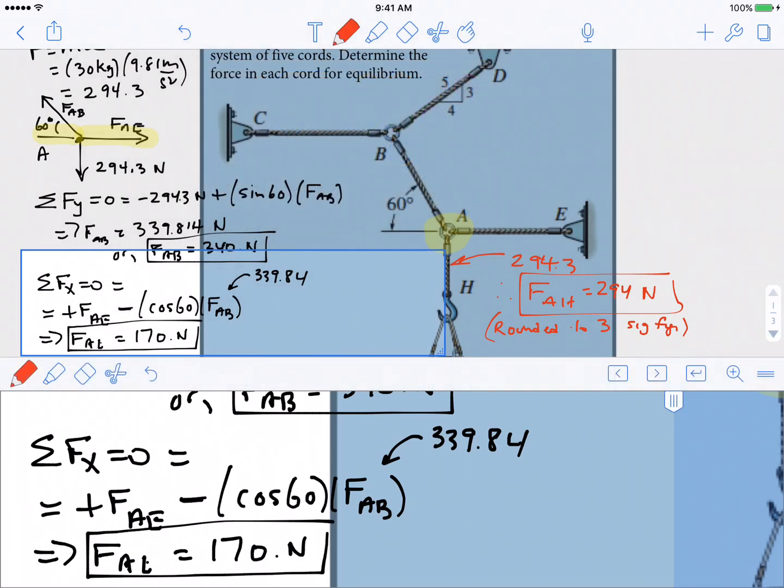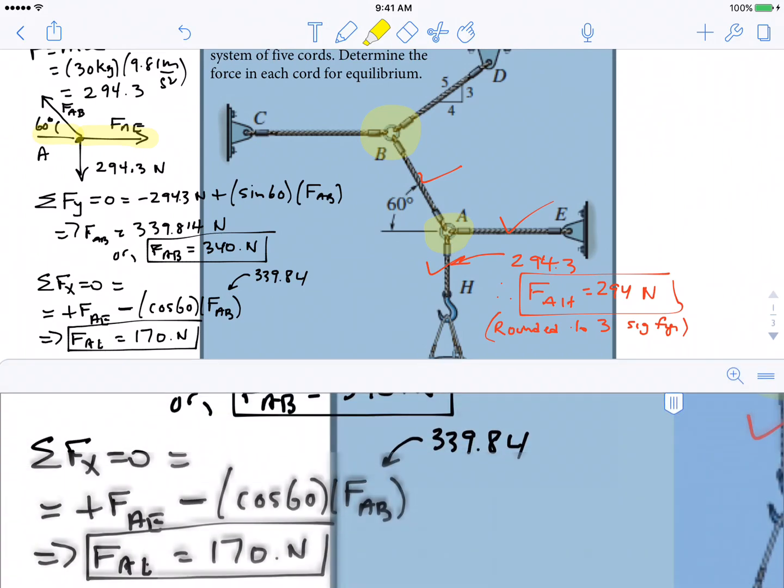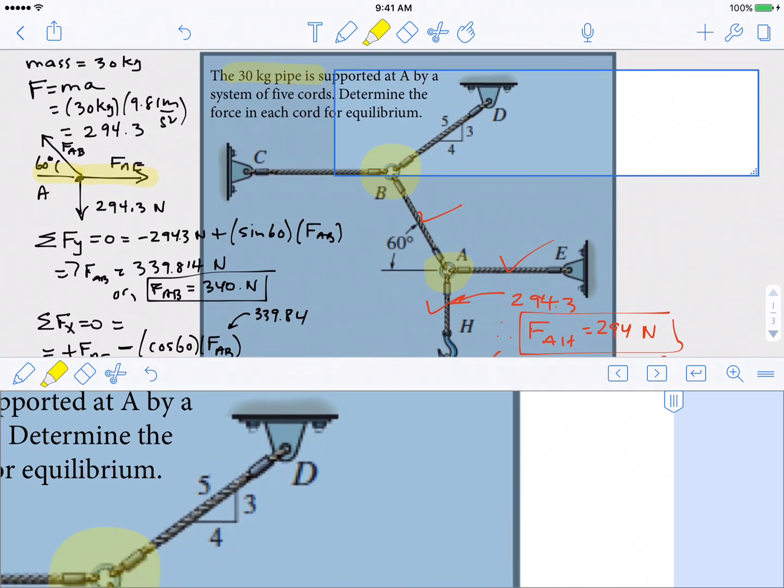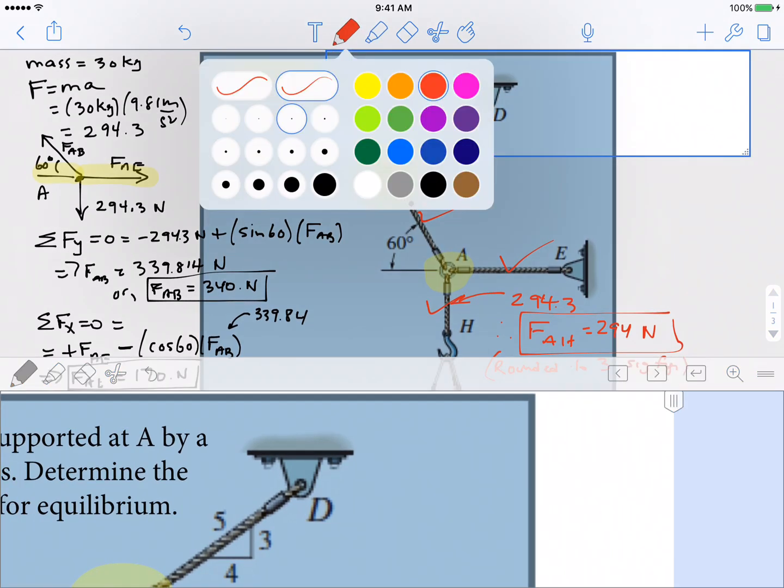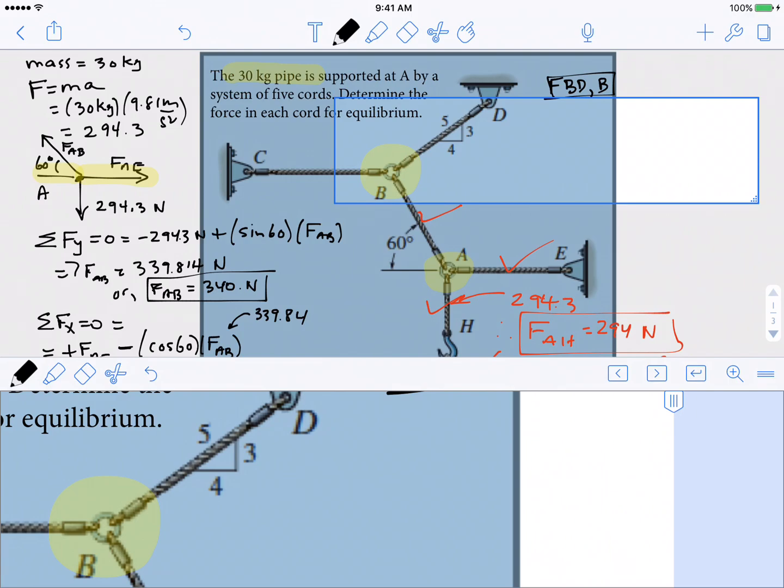So let's shift our attention to the big diagram and have a look at what we found. We have found FAH already, we found FAE and we found FAB. So what's left? We haven't found FBC and we haven't found FBD. So what I'd like to do now is turn our attention to writing a free body diagram of point B. Step number one when we're starting a new analysis is we need to alert whoever is looking at our work to what we are doing. So we are now doing a free body diagram of B.